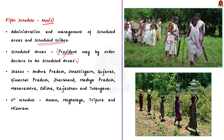Currently, there are 10 states having Fifth Schedule areas: Andhra Pradesh, Chhattisgarh, Gujarat, Himachal Pradesh, Jharkhand, Madhya Pradesh, Maharashtra, Odisha, Rajasthan, and Telangana. Note that scheduled tribes residing in the states of Assam, Meghalaya, Tripura, and Mizoram are included in the Sixth Schedule and not the Fifth Schedule.